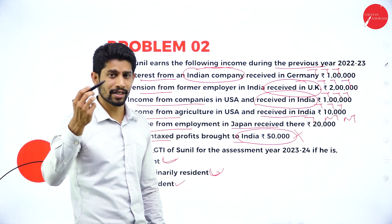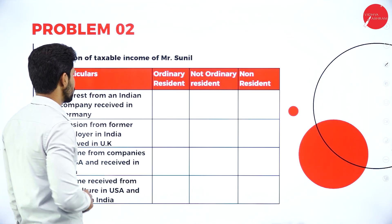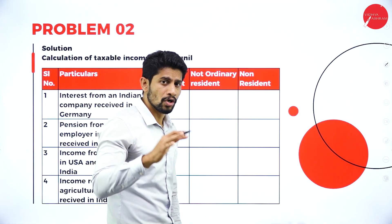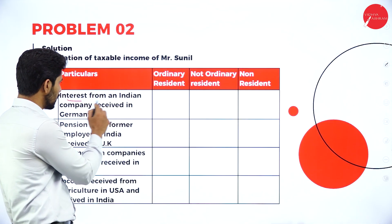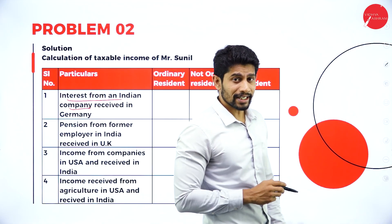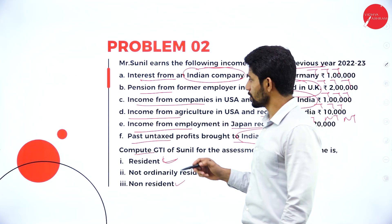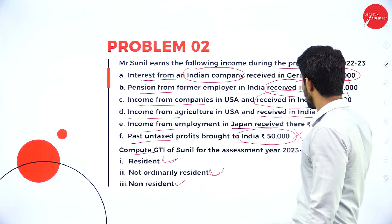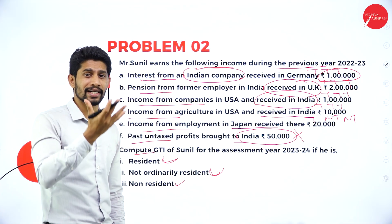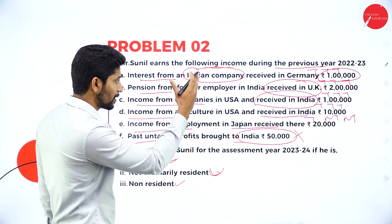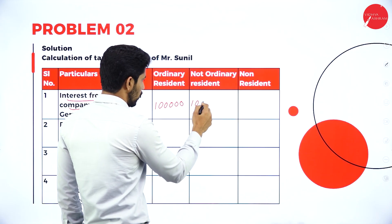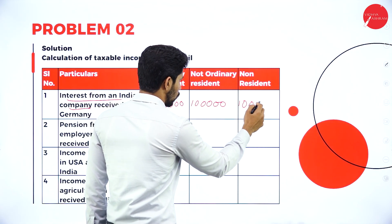Now we know the tax incidence, so we can solve the problem directly. The format has four columns: particulars, ordinary resident, not ordinary resident, and non-resident. First point: interest from an Indian company received in Germany — amount is rupees 1 lakh, income generated in India, so taxable, taxable, taxable. Value: 1 lakh, 1 lakh, 1 lakh.